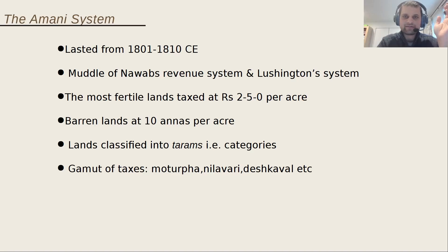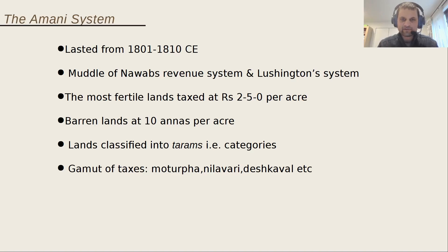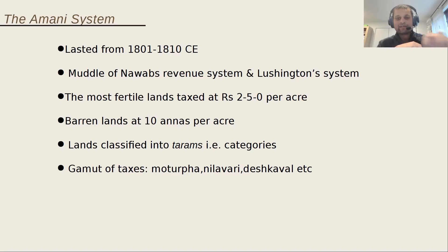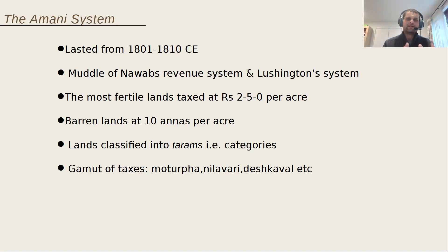Even barren lands were taxed. If you have a farm of 10 acres, there might be five or six acres you are actually farming, four acres left fallow for animals to graze, and one or two acres of wasteland. But even those lands were taxed — even semi-desert lands were taxed at 10 annas per acre — because under British rule every acre of land was assumed to be farmed. So if you owned 10 acres, you were paying tax as if you were farming all 10.